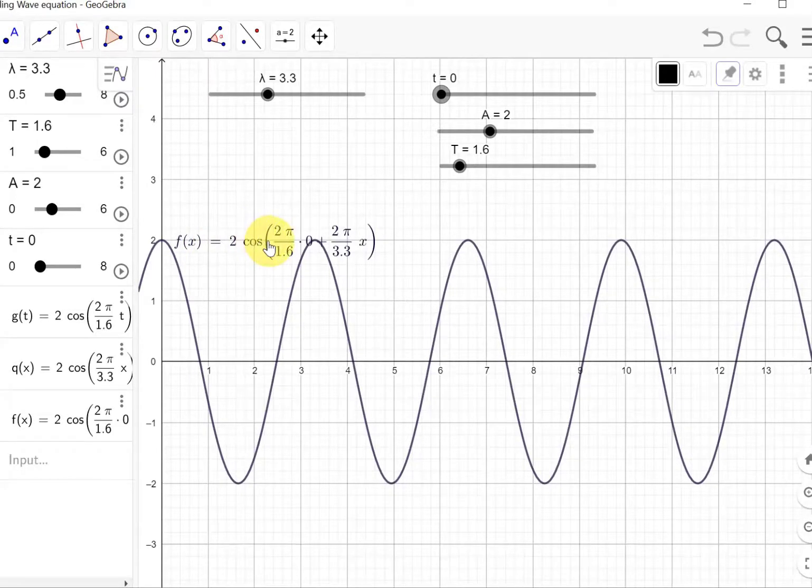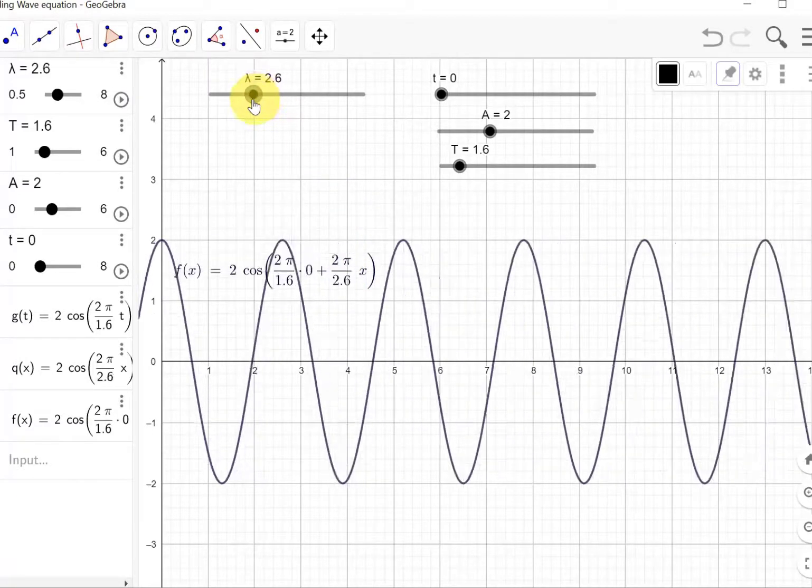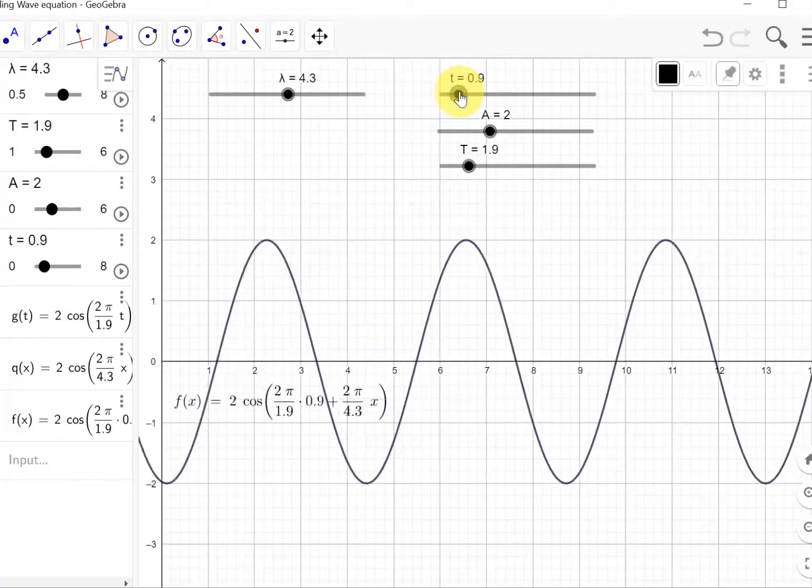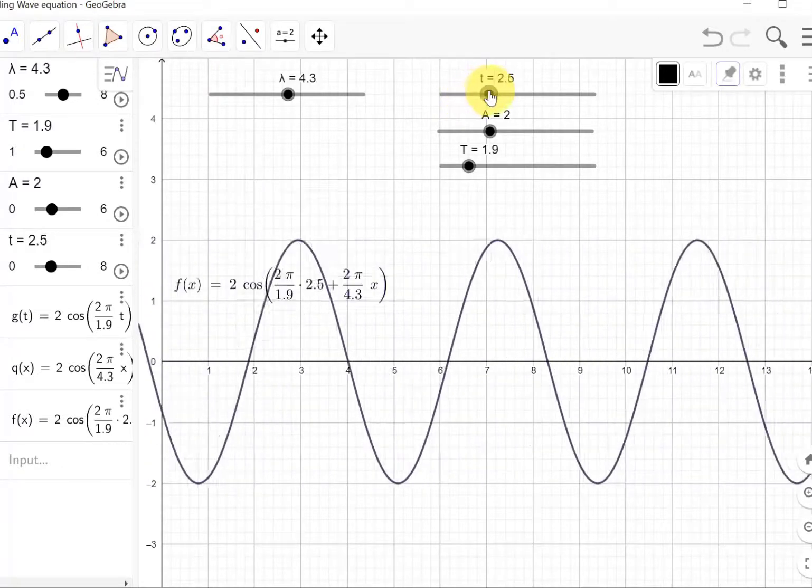Let me get rid of the position equation from here. Now you can see time, and you can change the period. When you change the wavelength, nothing happens here because this equation does not contain information about wavelength. Now let me bring the traveling wave equation that has information about both time and position. To make a plot, I need to replace t and wavelength by particular numbers. I can change them as you can see. Wavelength can be changed, and that wavelength information is right here in this equation. Similarly, I can change the period.